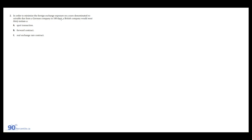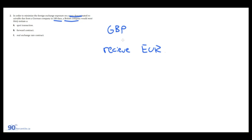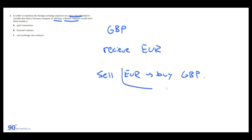In order to minimize the foreign exchange exposure on a euro-denominated receivable from a German company in 100 days — a British company receiving euros while their operations are in pounds — to minimize FX exposure, they're going to enter into a 100-day forward contract and sell euros forward and buy pounds. This locks in the exchange rate and eliminates foreign exchange exposure. So B is the answer.